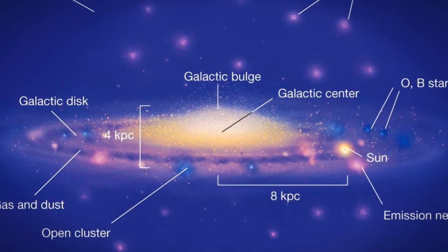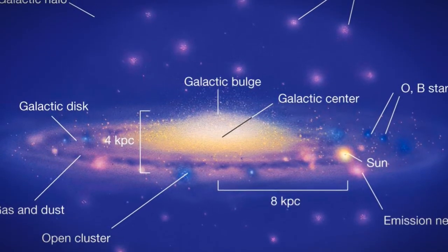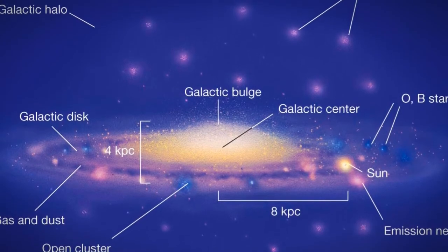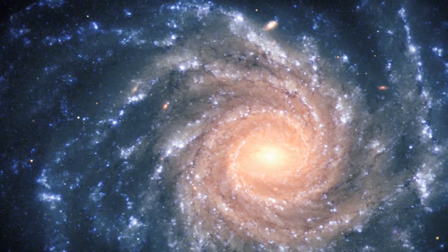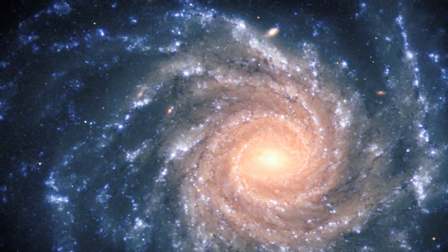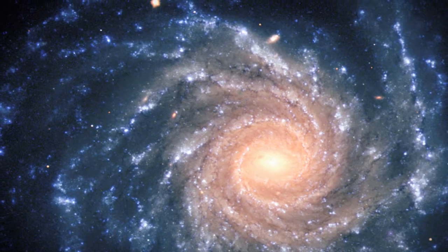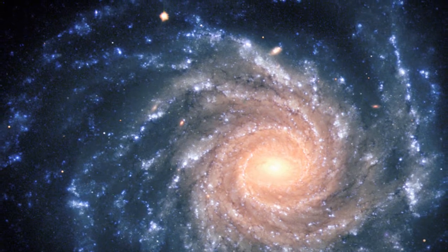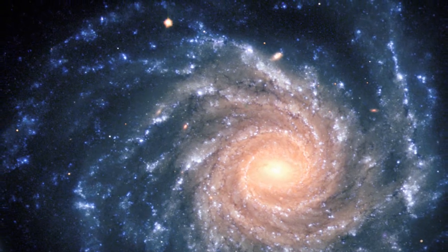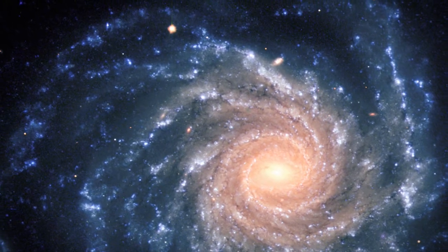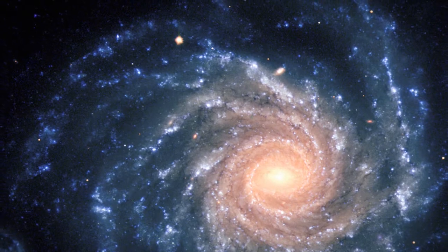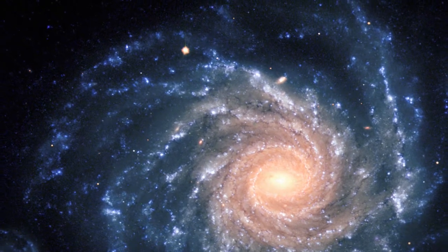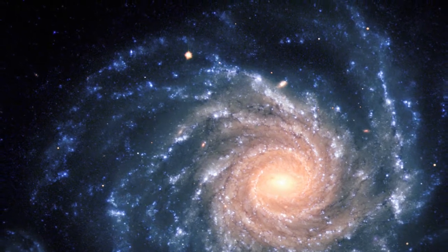The central bulge, or galactic core, is much thicker than the main disk. It is for the most part, due to its intense gravity, what holds the galaxy together. And just like how everything in our solar system revolves around the Sun, the stars of our galaxy revolve around the galactic core.